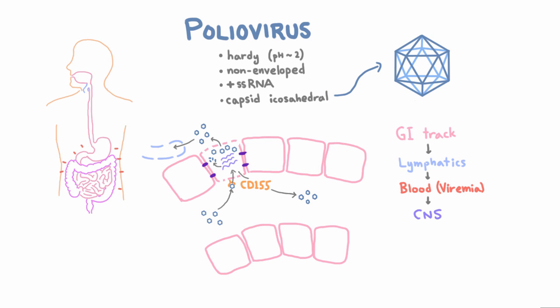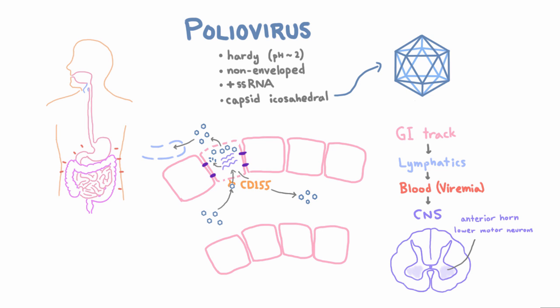The lower motor neuron cell bodies are in the anterior horn of the spinal cord. Here, this region is all axons, this region is all cell bodies, and the ones up here are the motor neurons. What do we call inflammation of the spinal cord? Myelitis. So when poliovirus infects the spine and causes paralysis, we call it poliomyelitis. You might have heard that term before, and now you know where it comes from. That's how we go from infection in the GI tract all the way to paralysis.